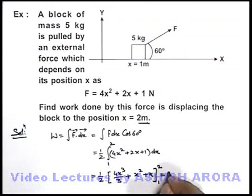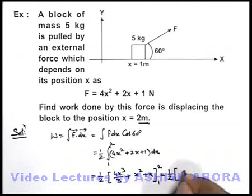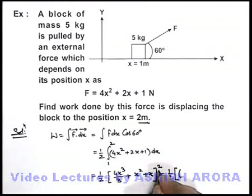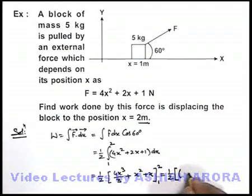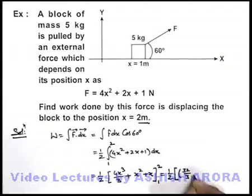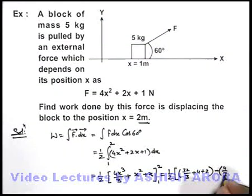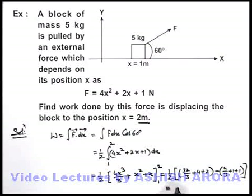On substituting the limits, we get one-half of: first putting x equal to 2 — eight into four is 32/3, plus 4, plus 2 — minus putting x equal to 1 — that is 4/3 plus 1 plus 1. On solving, we finally get 20/3 joules, and that is the answer to this question.